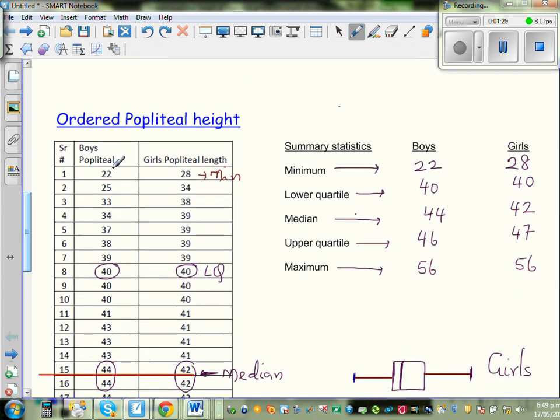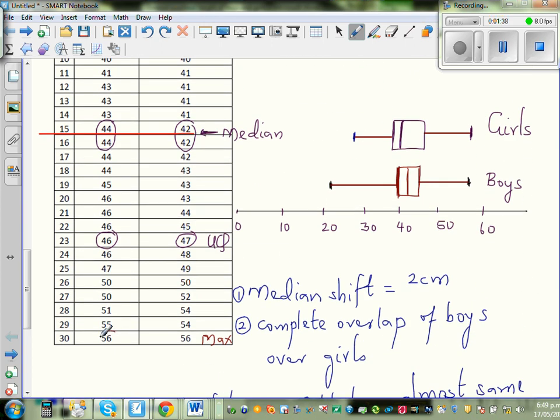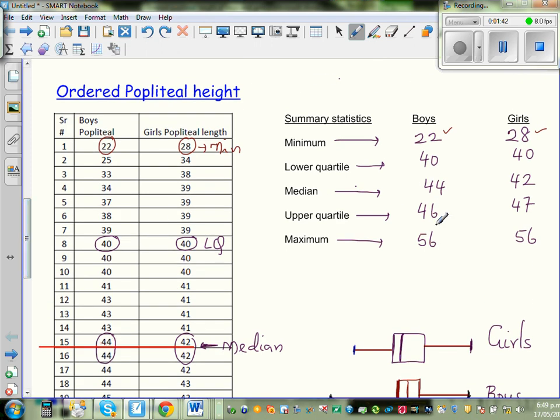So obviously this is your minimum for boys and girls. So this is 22 and 28. So let's go to maximum. So maximum is 56. They are the same. So that is 56.